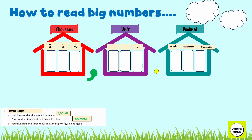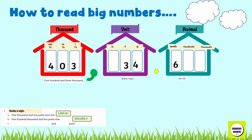Four hundred and three thousand and thirty-four point six six: adding the zero gives us the final answer 403,034.66.